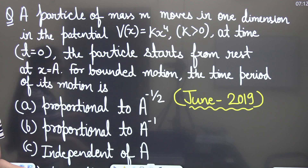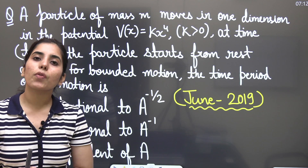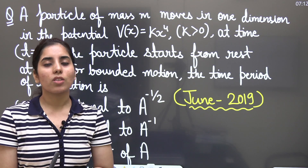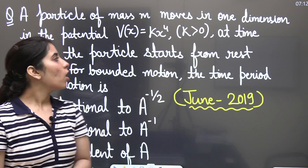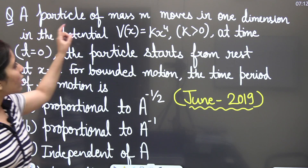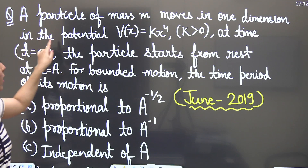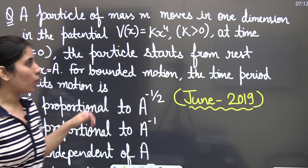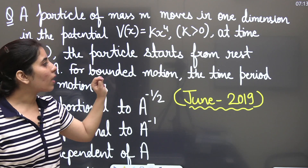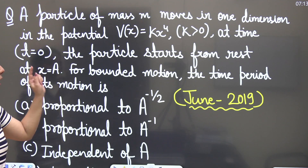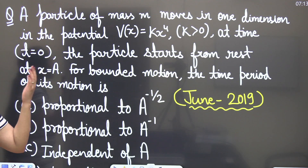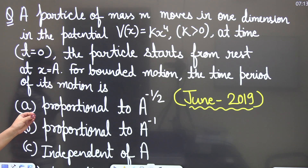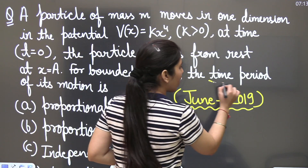The question is: a particle of mass m moves in one dimension in the potential V(x) = kx⁴, where k > 0. At time t = 0 the particle starts from rest at x = a. For bounded motion, the time period of its motion is — and we will also be telling you what kind of questions you can expect related to this topic, because we will be using a trick to solve it today.